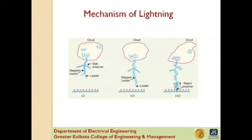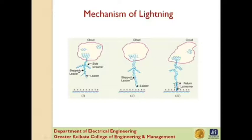The leader streamer will continue its journey towards earth as long as the cloud from which it originates has enough charge to maintain the gradient at the tip of the leader streamer above the strength of the air. If this gradient is not maintained, the leader streamer stops and the charge is dissipated without the formation of a complete stroke; in other words, the leader streamer will not reach the earth at all. It may be noted that the current in the leader streamer is low, less than 100 amperes, its velocity of propagation is about 0.05 times the velocity of light, and the luminosity of the leader is very low.